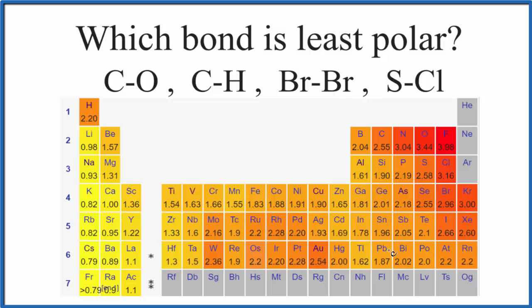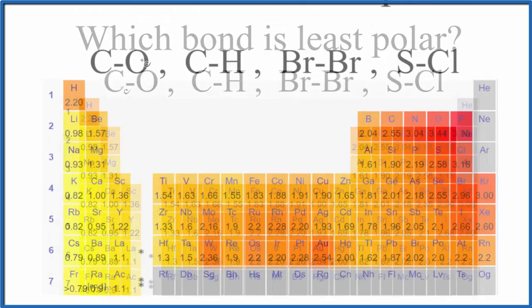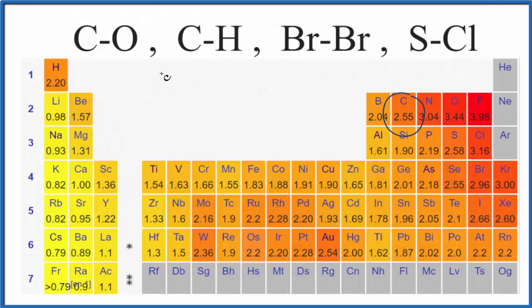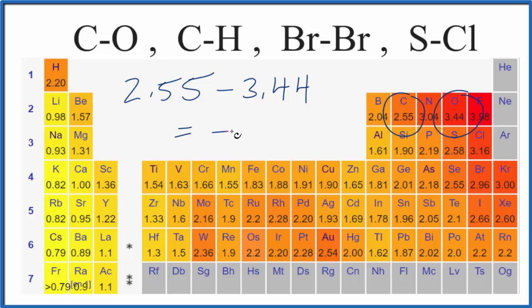We have the periodic table here and these numbers below the elements are electronegativity values. We're looking at the difference in electronegativity between the atoms. Carbon is 2.55 and oxygen is 3.44. The difference gives us negative 0.89. Let's get rid of the negative sign, so a difference of 0.89. That's a polar bond.